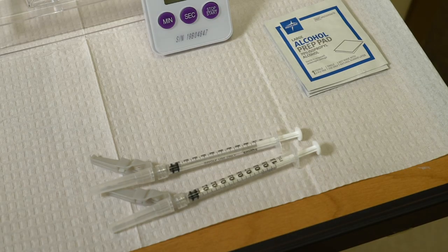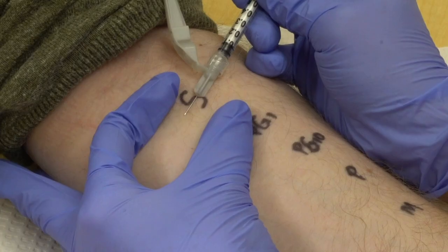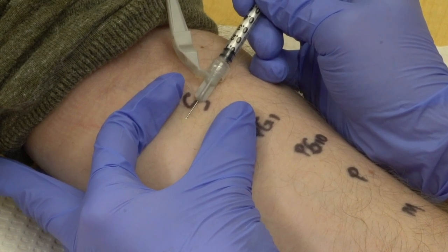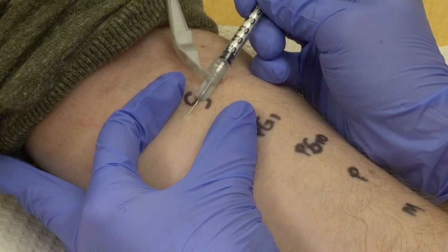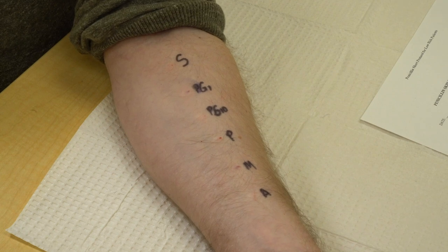Moving on to intradermal testing, we first prep the skin as before, but for this testing we use an intradermal needle — the same type used for TB testing — to place 0.02 mL of each reagent. The most reproducible method is to fill the syringe with test solution and then expel the excess fluid to obtain exactly 0.02 mL. While an intradermal saline should always be placed, an intradermal histamine can be reserved for cases where the skin prick histamine test was insufficient or negative. Tests are placed right under the epidermis and into the dermis on the extensor surface of the upper arms, which should create a small bleb.